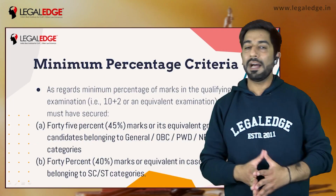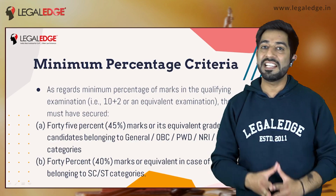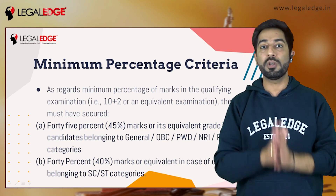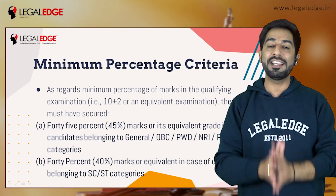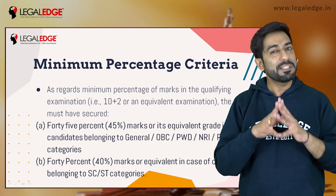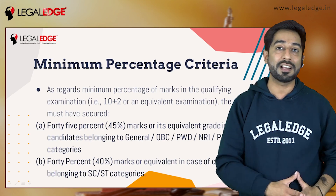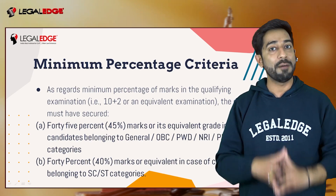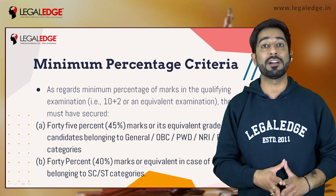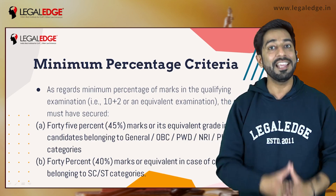Now let's talk about the minimum percentage criteria. The minimum percentage required in 10+2 or any equivalent exam to get entry into a national law school by writing CLAT is merely 45 percent. If you score 45 percent marks and you belong to the General category, OBC category, or PWD category, then you can definitely fill the CLAT form.